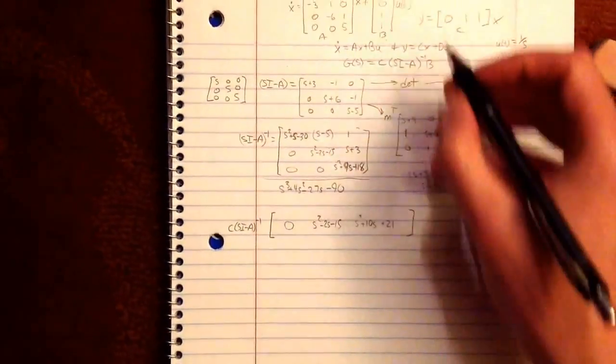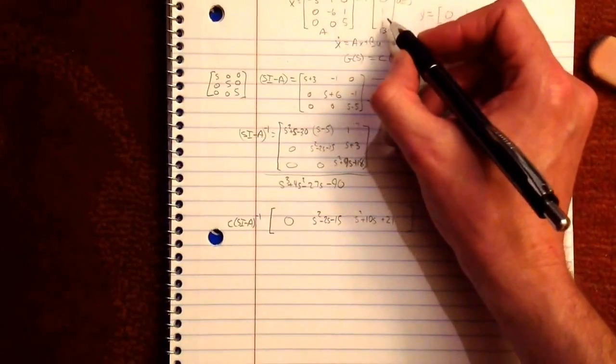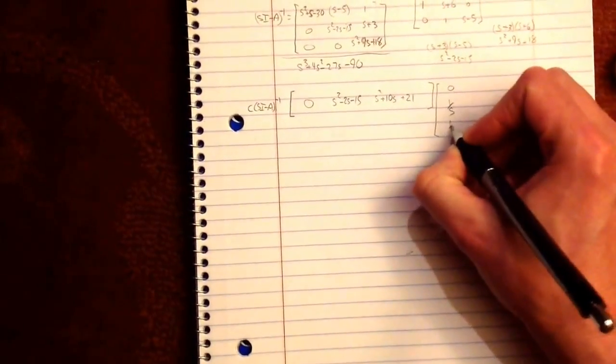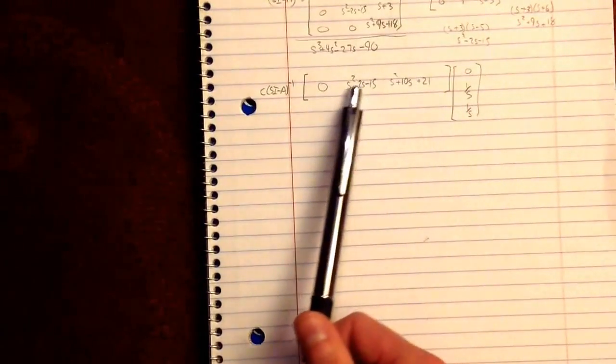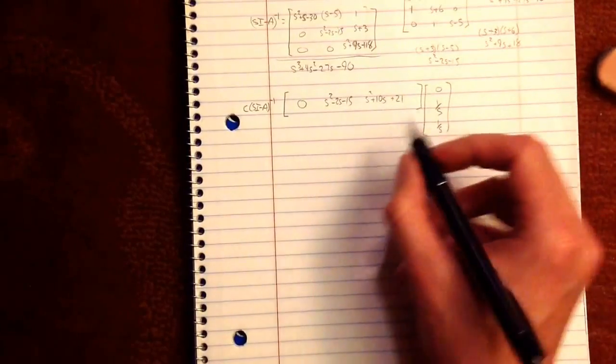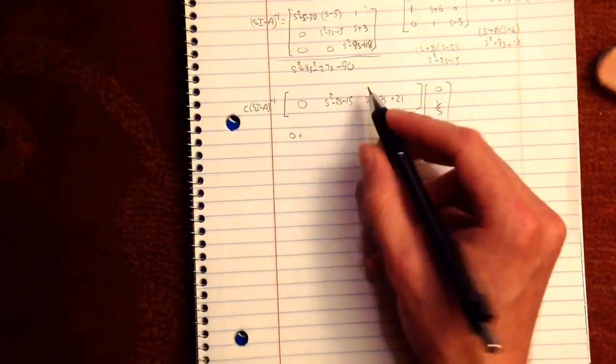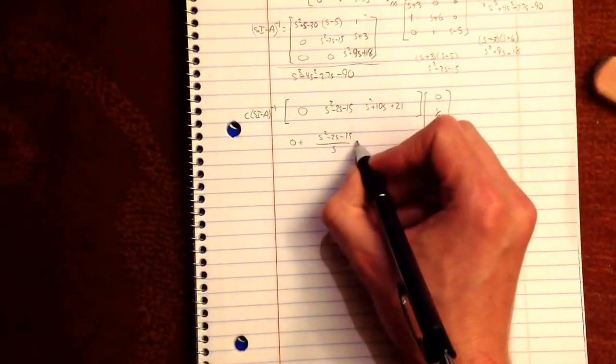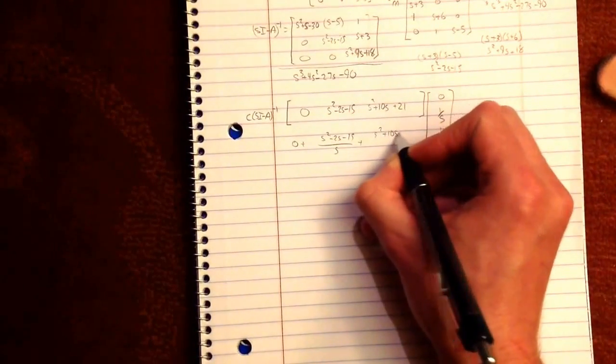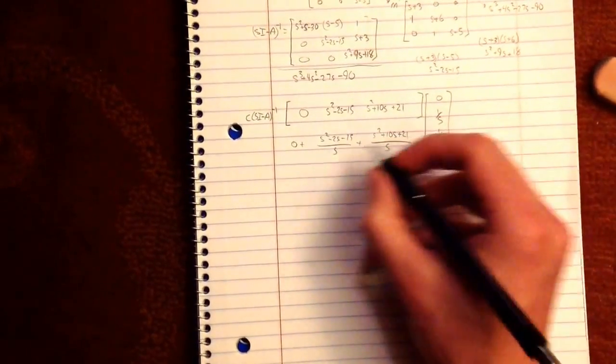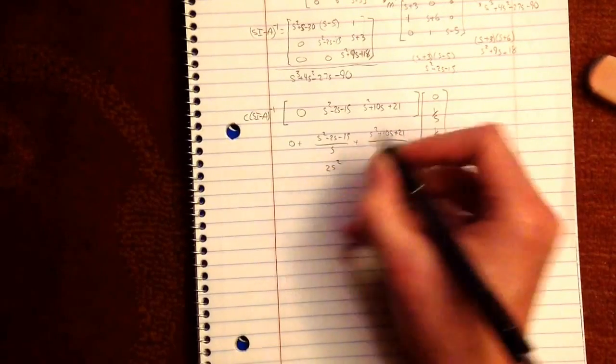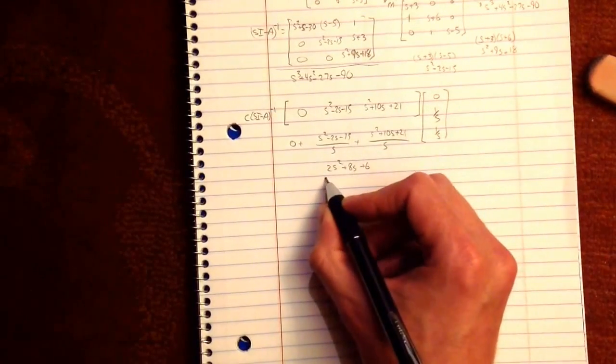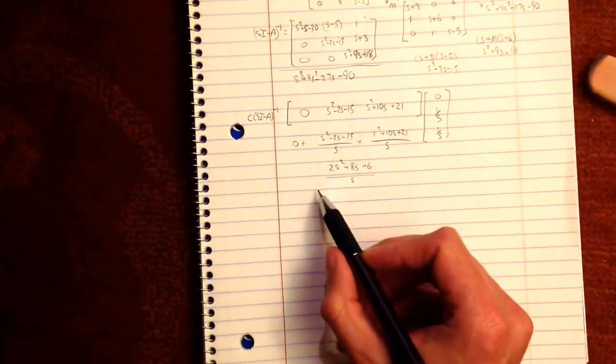So I dragged it down too early. That is basically saying that this matrix is 0, 1 over S, 1 over S. So we have to multiply that here. So that means we're going to have 0 plus this times 1 over S. So you add those together and you get 2S squared plus 8S plus 6 over S. And that's over this entire thing here.